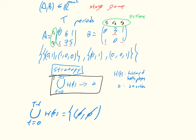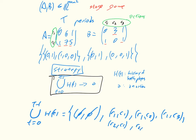Then we need to consider the second time we play — all possible histories: r1c1, r1c2, r1c3, r2c1, r2c2, and r2c3. That is all possible histories of the game — everything the players could know. A strategy then becomes a mapping of each one of these histories to an action.